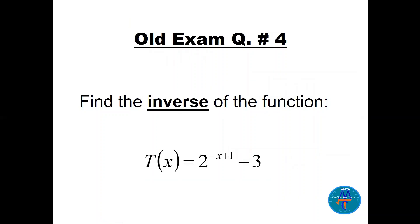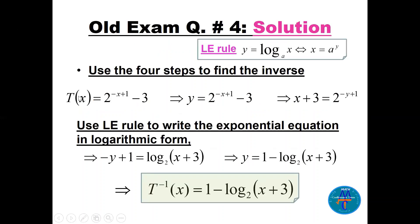Also find the inverse of the function T(x) equals 2 to the power (minus x plus 1) minus 3. Using the four steps: write y equals 2 to the power (minus x plus 1) minus 3, then interchange x and y to get x equals 2 to the power (minus y plus 1) minus 3. Apply the LE rule to convert to logarithmic form: minus y plus 1 equals log base 2 of (x plus 3). Solving for y gives T inverse(x) equals 1 minus log base 2 of (x plus 3).